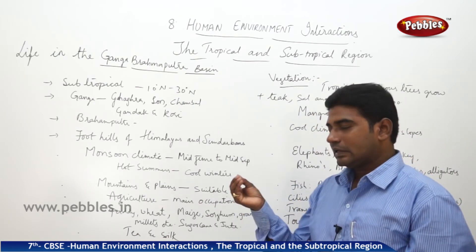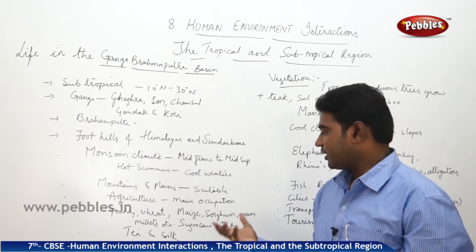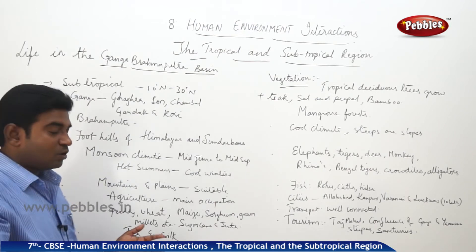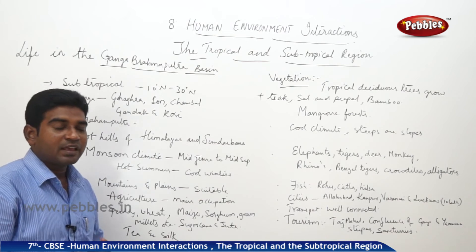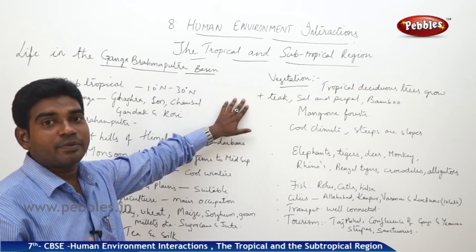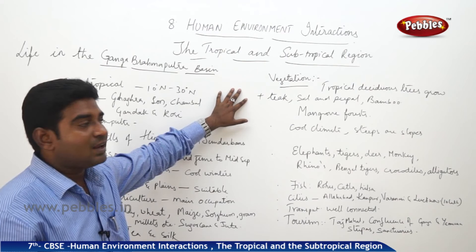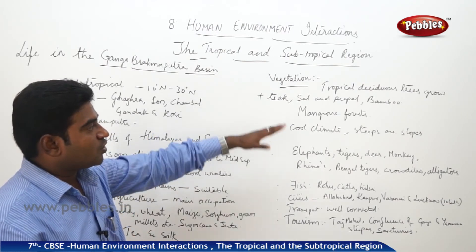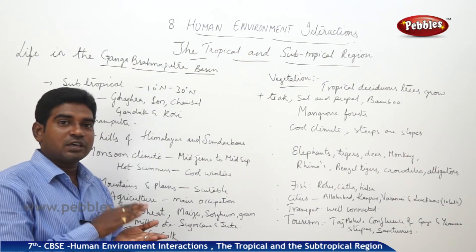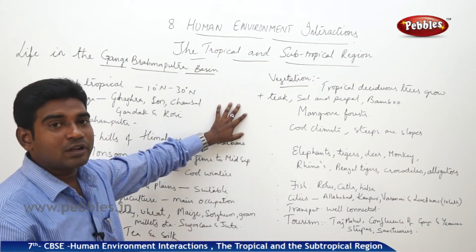The commonly grown crops are paddy, wheat, maize, sorghum, gram, and millets. The commercial crops are sugarcane and jute. In some places like Assam and other regions, teak is grown, and in Bihar, silk is also produced. The main trees are tropical deciduous trees — teak, sal, peepal, and bamboo. Mangrove forests cover the coastal and Sundarban regions. The terrain features cool climatic conditions and steeply sloping hillsides.